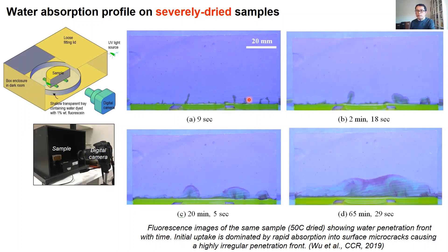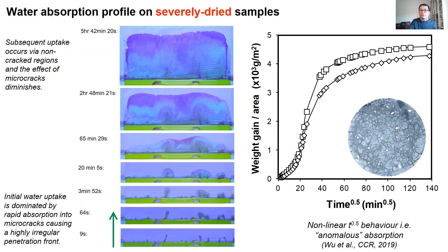Once the microcracks become fully saturated, subsequent water uptake occurs through the non-cracked regions and the apparent effect of the microcracks diminishes over time. The subsequent penetration front becomes more uniform until the sample reaches full saturation. When we combine image analysis with the conventional sorptivity test, we see that the microcracking produces anomalous absorption behavior in the square root of time plot — instead of a nice straight line, we now observe non-linear or sigmoidal behavior. This anomalous behavior increases with severity of microcracking; therefore the microcracks accelerate initial absorption and distort the square root of time plot.